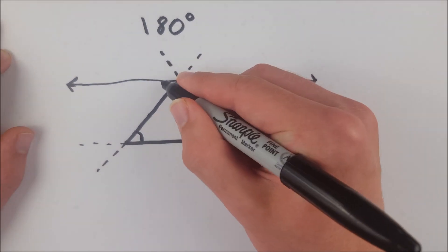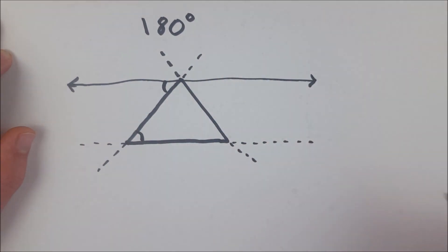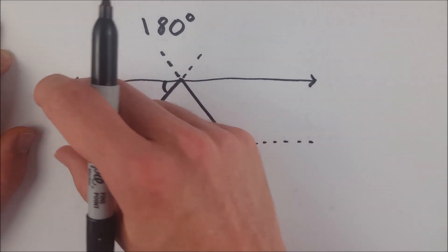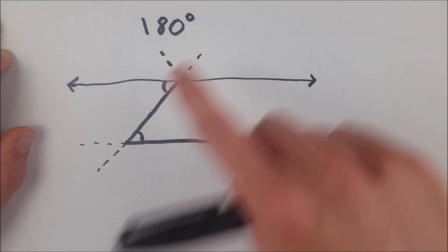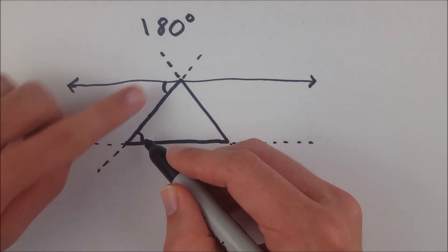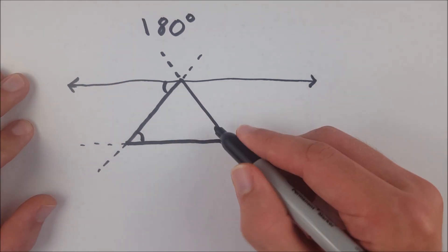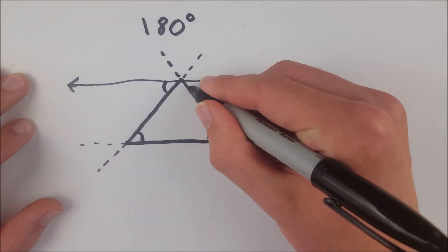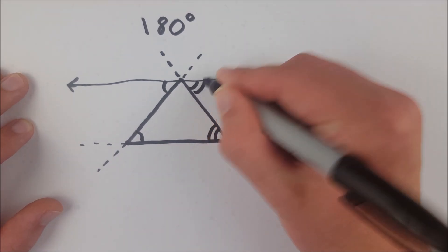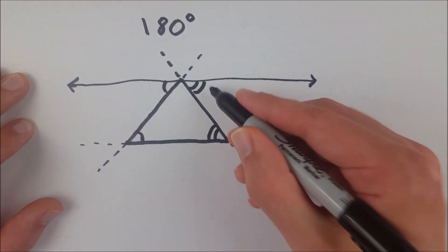So then we know that this angle, right here, is congruent to this angle here, because they are alternate interior angles. You've got your two parallel lines here, and you've got this line here that cuts those two parallel lines, these are your alternate interior angles. Similarly, this angle here is congruent to this angle here. So this is congruent to that, and this is congruent to that.